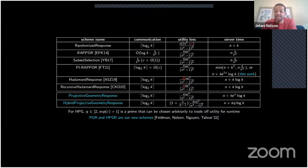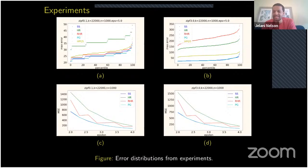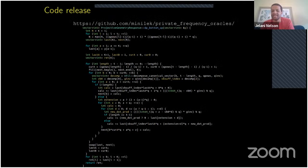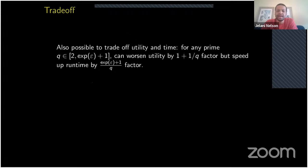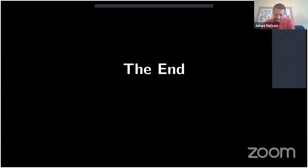Using projective geometry we construct the set collection achieving the best known utility loss with optimal communication and fast run times. We implemented this algorithm — the code is online — and it performs well in practice. Plots confirm it's fast in practice, using dynamic programming for efficiency. It's also possible to trade off speed for utility loss. And that's the end of the talk.